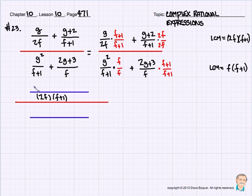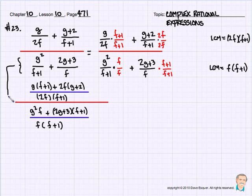And if we work on the numerator, we have g times f plus 1 plus 2f times g plus 2. All I did was I combined the numerator's numerator and combined the numerator's denominator. I'm going to do the same thing for the bottom. The bottom looks like f times f plus 1 because that's this part down here. And when we combine this, we end up with g squared f plus 2g plus 3 times f plus 1.